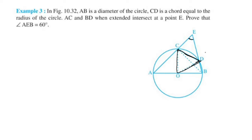To do this, note that CD is a chord and the radius is equal to CO and DO. Therefore triangle COD is equilateral, meaning all its angles are 60 degrees each.